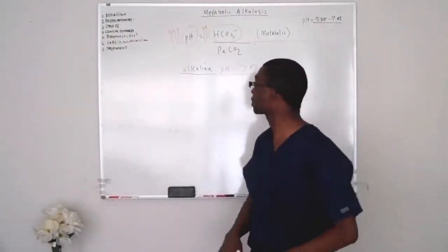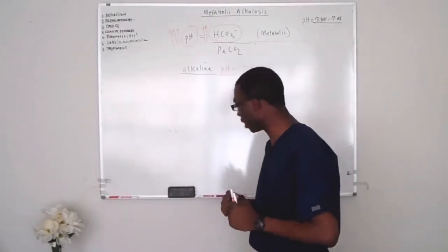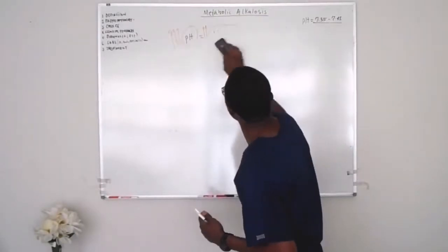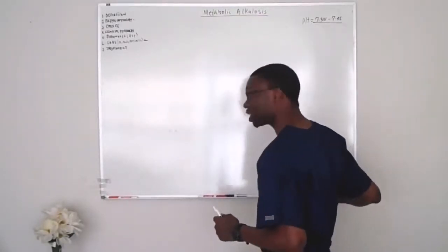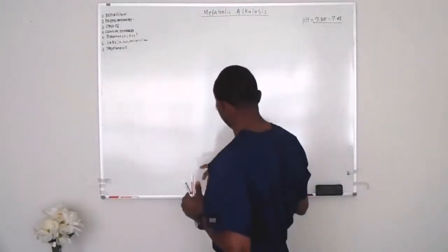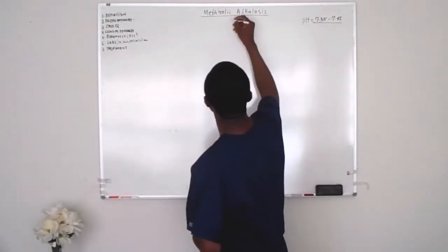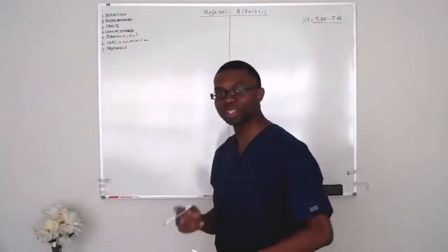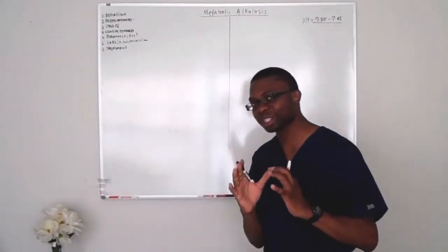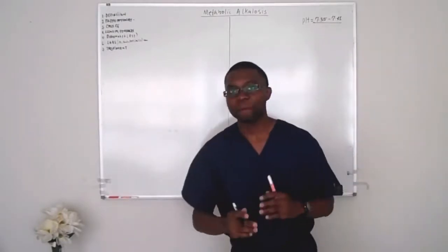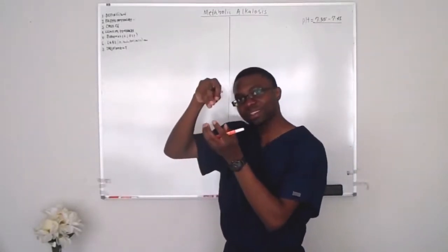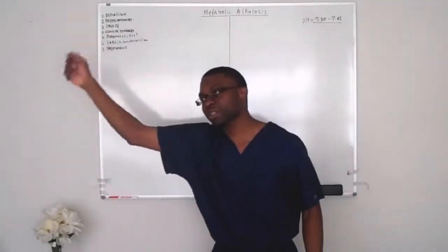How does that happen? That is with the pathophysiology. Let's start with causes first. Now that I've done a brief review of this formula, we're going to do something very easy. We're going to break metabolic alkalosis into two parts. Medicine is all about compartmentalization. If you split your brain into little compartments and put information in there, everything makes sense.